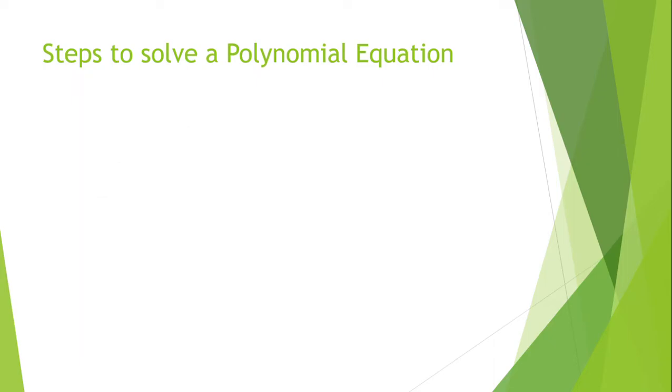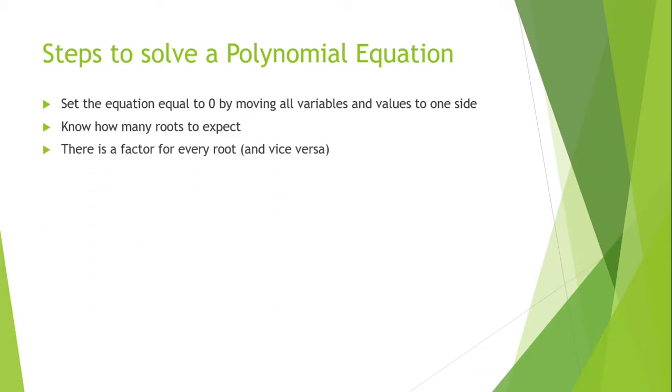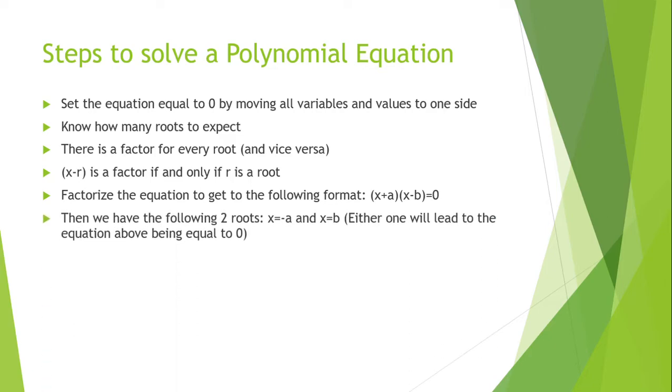The steps to solve a polynomial equation: You have to set the equation equal to 0 by moving all variables and values to one side. Know how many roots to expect. There is a factor for every root and vice versa. x minus r is a factor if and only if r is a root. Factorize the equation to get to the following format. Then we have the following two roots: x equals negative a and x equals b. Either one will lead to the equation above being equal to 0.